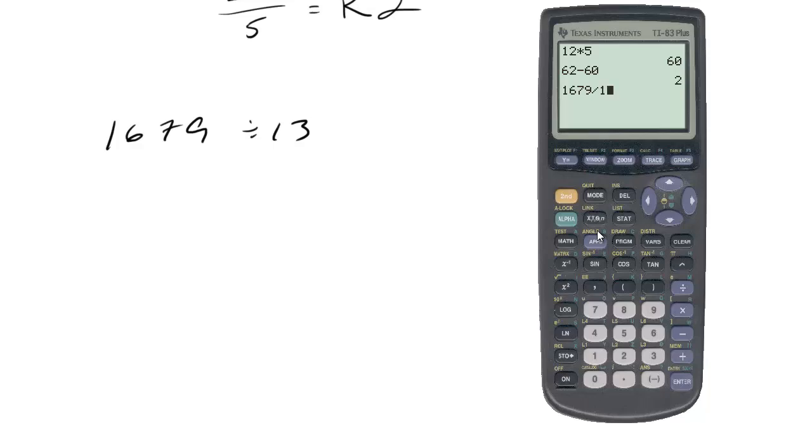1679 divided by 13. Cool. So it doesn't. So what I'll do to find the remainder is I'll subtract 129. That leaves me with a decimal. I'll multiply by what I divided by which was 13 and I get remainder 2. So it's a nice little quick way of finding your remainder.